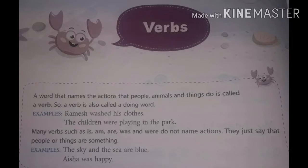Students, you have studied about verbs in previous classes. A verb that names the action that people, animals and things do is called a verb. You must have studied it as action verb. A verb is also called a doing verb. Example: Ramesh washed his clothes. The children were playing in the park. Many verbs such as is, am, are, was and were do not name actions — they just say that people or things are something. These are called helping verbs or auxiliary verbs.